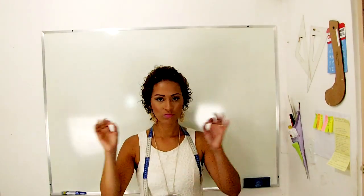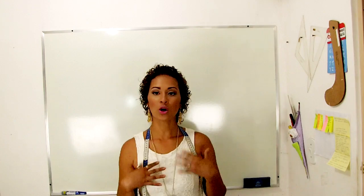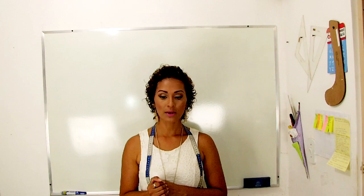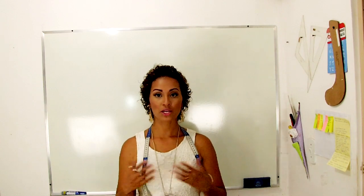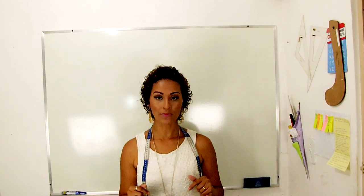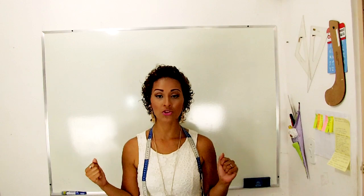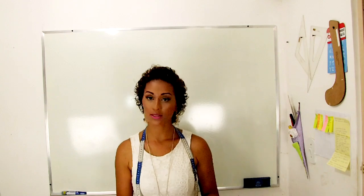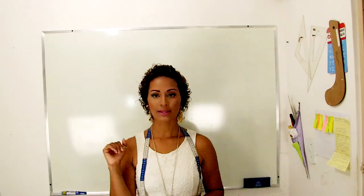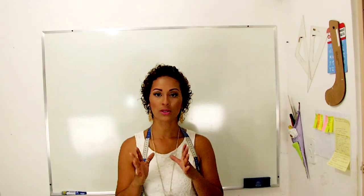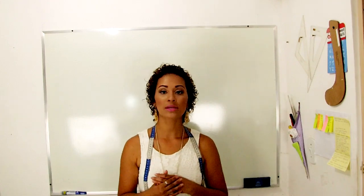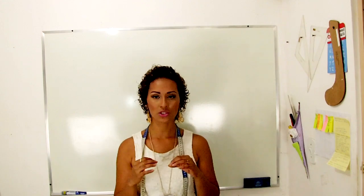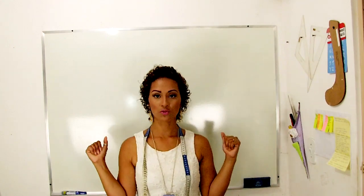Então, essa modelagem é bem simples, é praticamente um retângulo, só com desenhozinho do decote, tem um franzidinho aqui, uma aplicação de renda e o efeito mesmo de caimento a gente consegue na hora da costura. Vocês vão ver que a modelagem é bem simples, você pode alterar as medidas que eu vou usar para qualquer tamanho que você quiser.